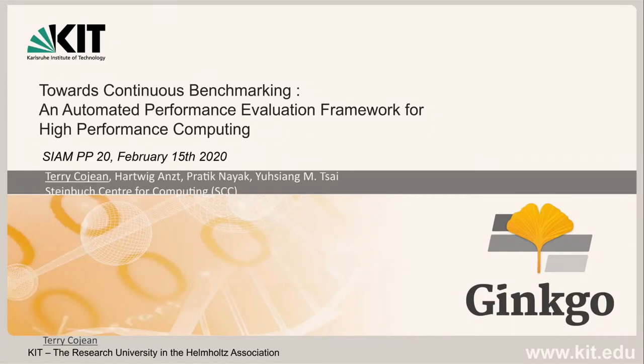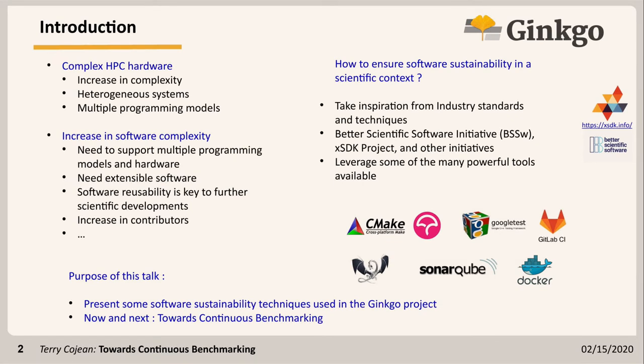I'm speaking about hardware here, and I'll be talking about what we are doing with the Ginkgo library in terms of software sustainability and what we want next, which is continuous benchmarking. We now have complex HPC hardware everywhere in the landscape, and that usually means an increase also in software complexity. There is a big question: how can we ensure software sustainability in a scientific context?